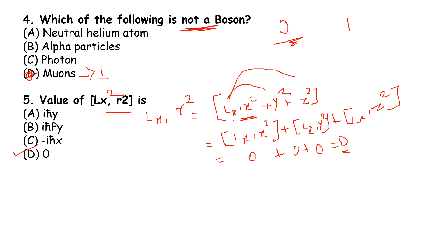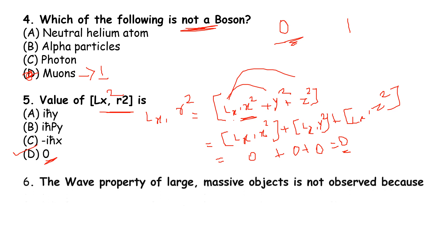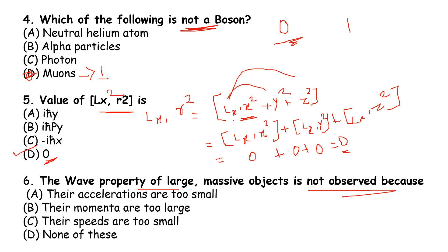Option D is the correct answer for [Lx, R²] = 0. Hope you understand. Next: the wave property of large massive objects is not observed because their momenta are too large. Their de Broglie wavelengths are extremely small. Option B is the correct answer.